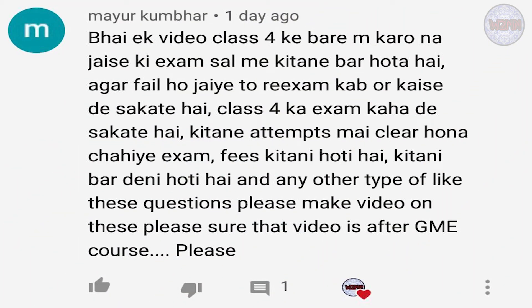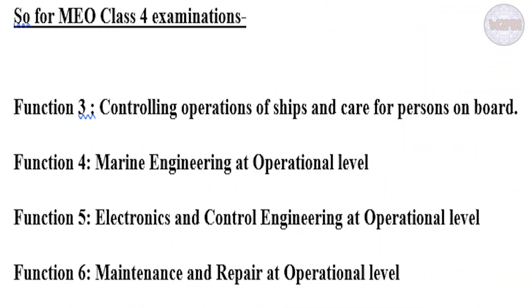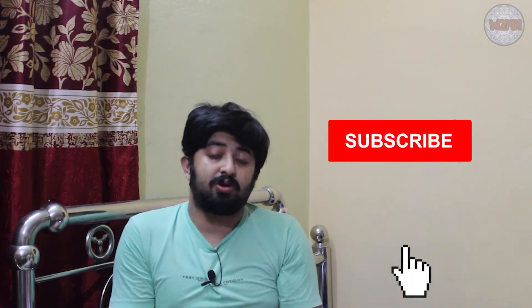For the written examination, there are six papers: Engineering Knowledge (EKG), Marine Knowledge Motor, Marine Electrotechnology, Ship Construction and Stability, Ship Safety and Environmental Protection, and Marine Engineering Practice. After clearing the written examination, you appear for orals. There are four oral functions: Function 3 — Controlling operation of ships and care for persons on board; Function 4 — Marine engineering at operational level; Function 5 — Electronics and control engineering at operational level; Function 6 — Maintenance and repair at operational level.